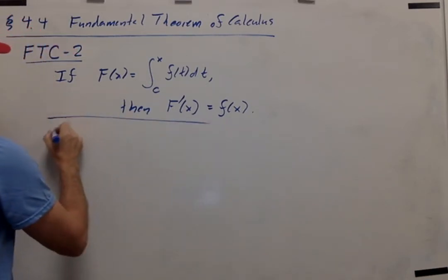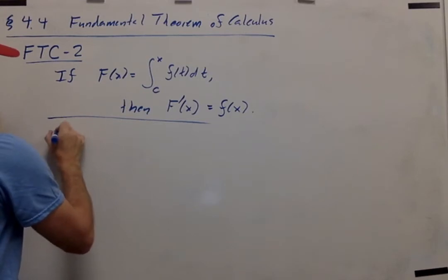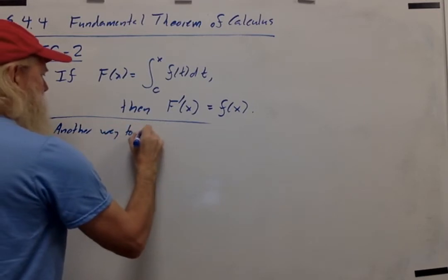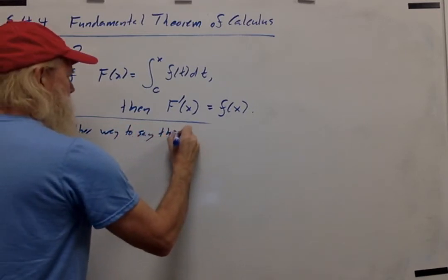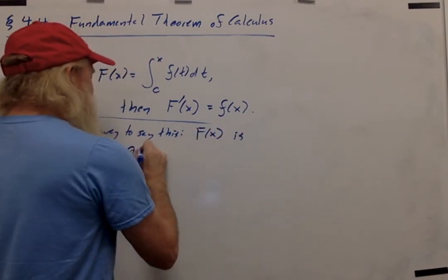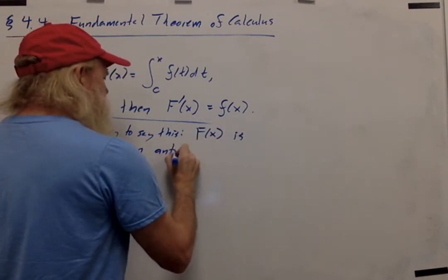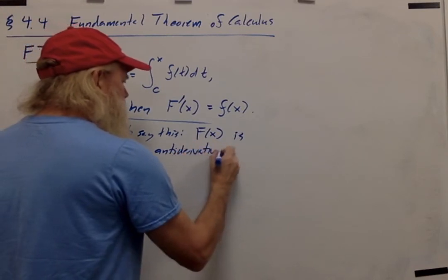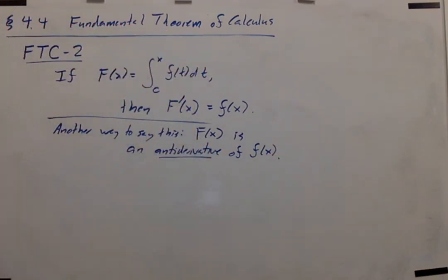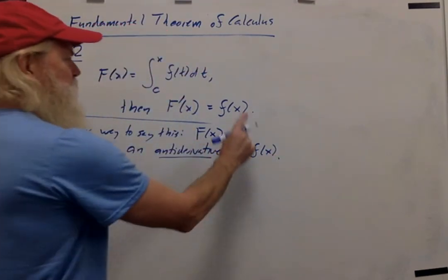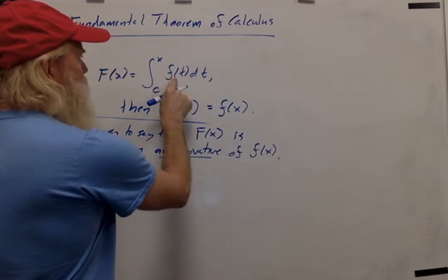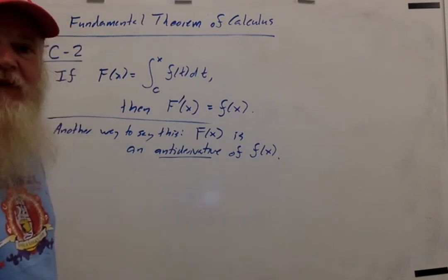Notice that another way of saying this is that big F(x) is an antiderivative of little f(x). So given a function f, if you want to find an antiderivative, one way to do that is by finding its cumulative area function.